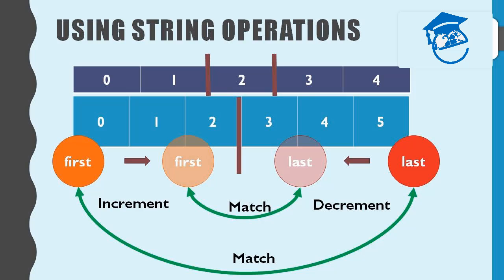This means the value of 'first' cannot hold a value greater than or equal to the value of 'last'. So our termination condition of the loop is: the value of 'first' should always be less than the value of 'last' — that is our satisfaction condition of the looping.